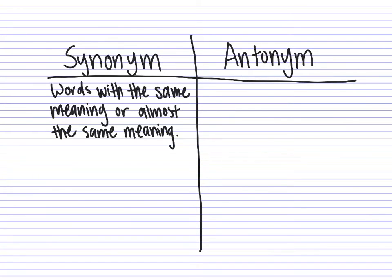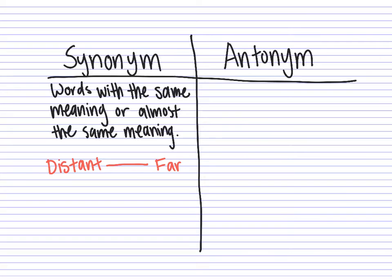So here are some examples. Let's start with the word 'distant.' If something is off in the distance — distant from where we are located — the synonym of that is 'far.' Something that is far away, a long distance from where we are.